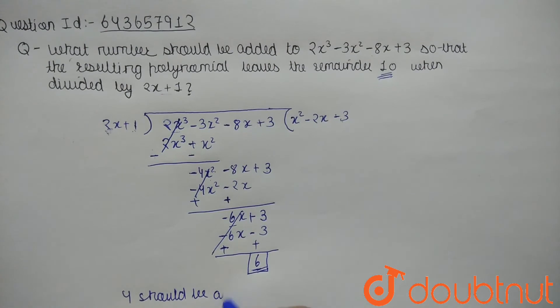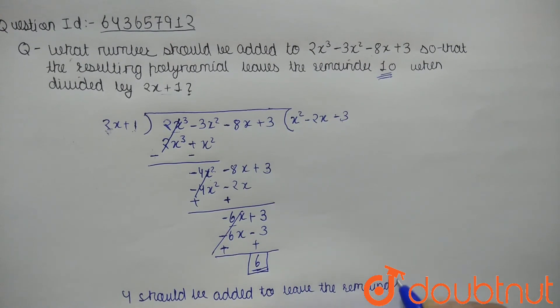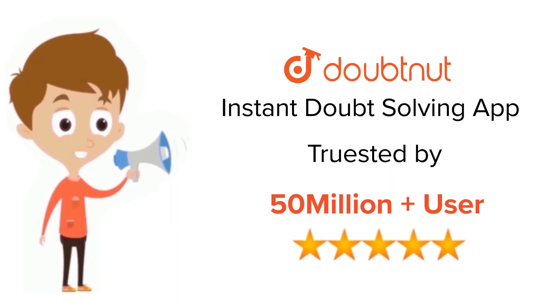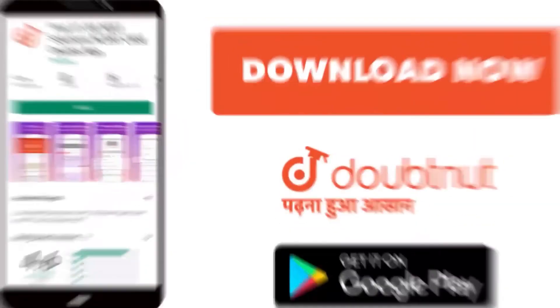4 should be added to leave the remainder 10. Okay, for class 6 to 12, IIT-JEE and NEET level, trusted by more than 5 crore students. Download Doubtnet app today.